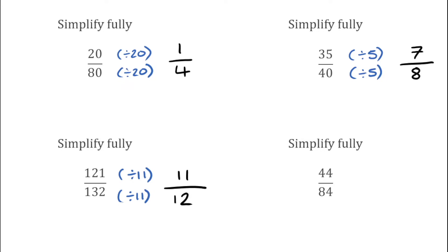For our last one we've got 44 over 84. The highest common factor here would be 4, as they're both in the 4 times table. So I'm going to divide the top and bottom by 4. If you don't notice that straight away you can do it in parts, but keep checking to see what you can simplify further by. 44 divided by 4 is 11, and 84 divided by 4 gives us 21. So this fraction fully simplified would be 11 over 21.